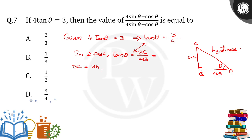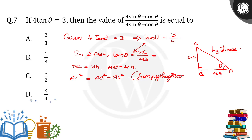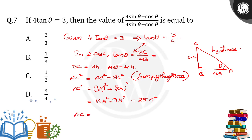Comparing the two tan θ values, let BC = 3k and AB = 4k, where k is any constant. We need to find AC. By the Pythagorean theorem, AC² = AB² + BC² = (4k)² + (3k)² = 16k² + 9k² = 25k². Therefore, AC = √(25k²) = 5k.